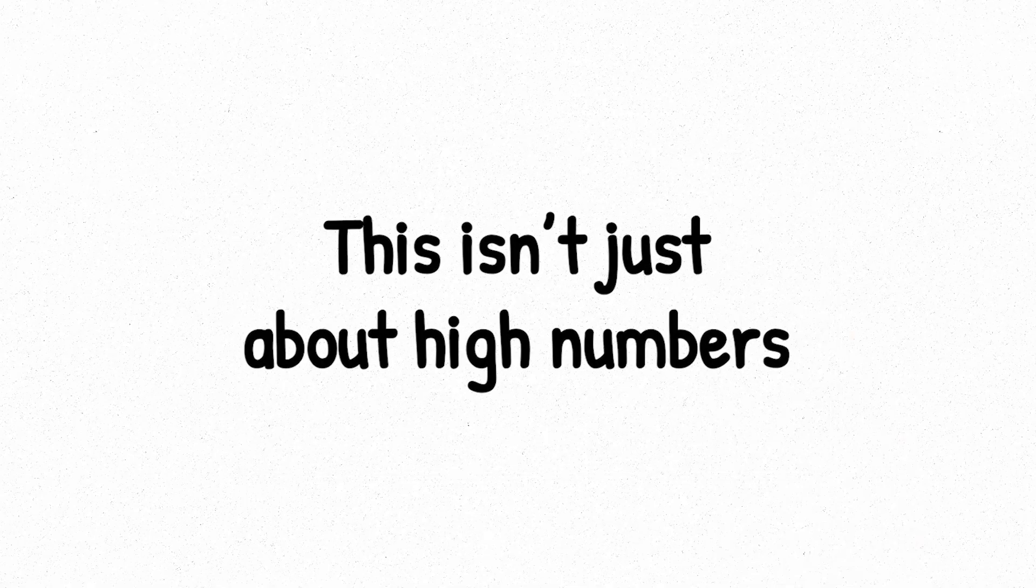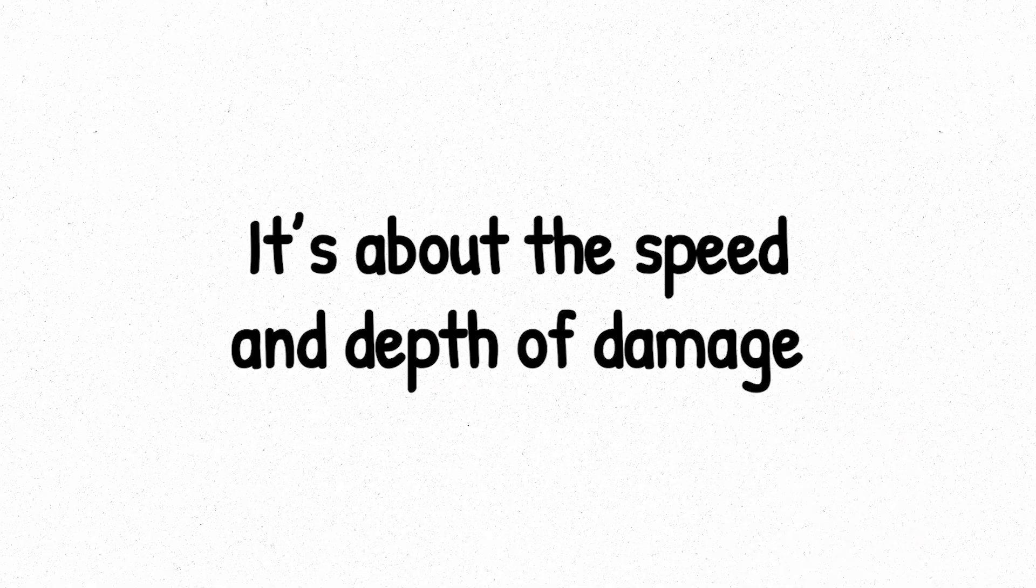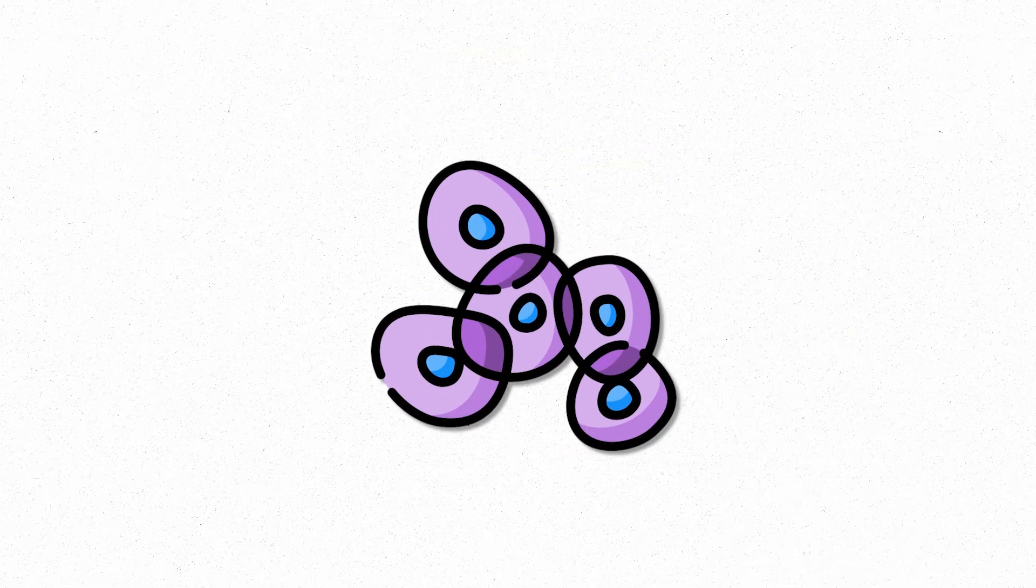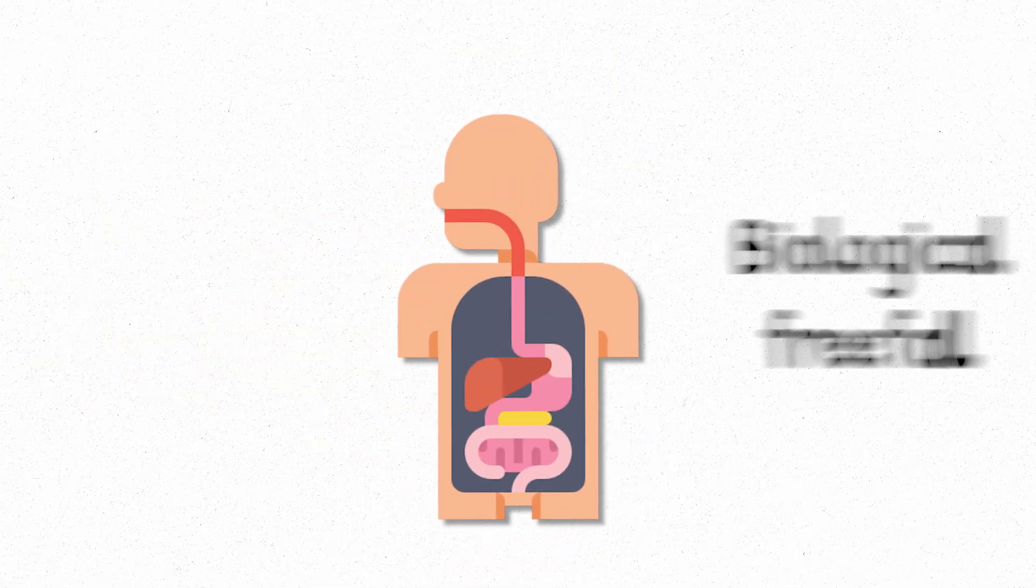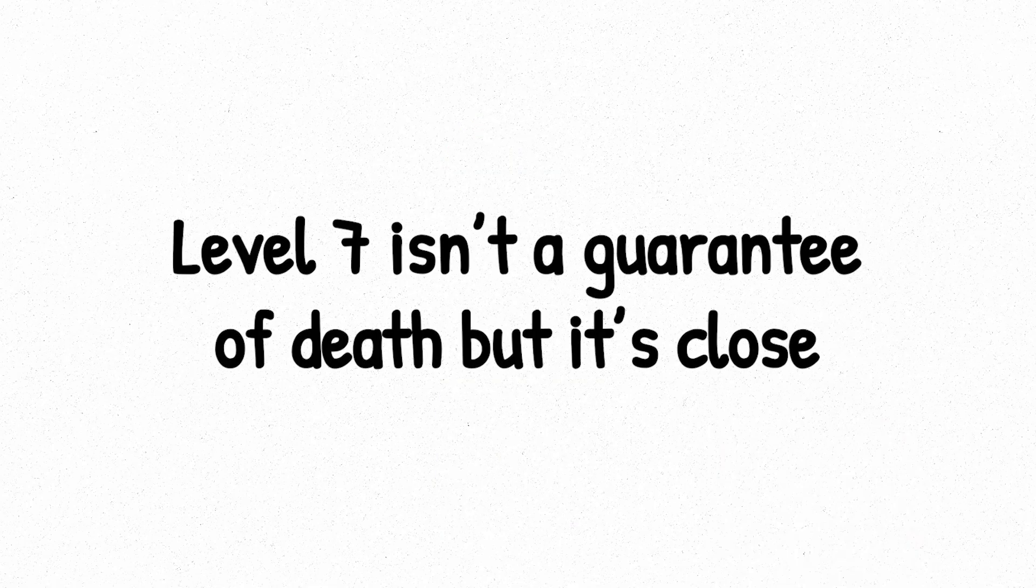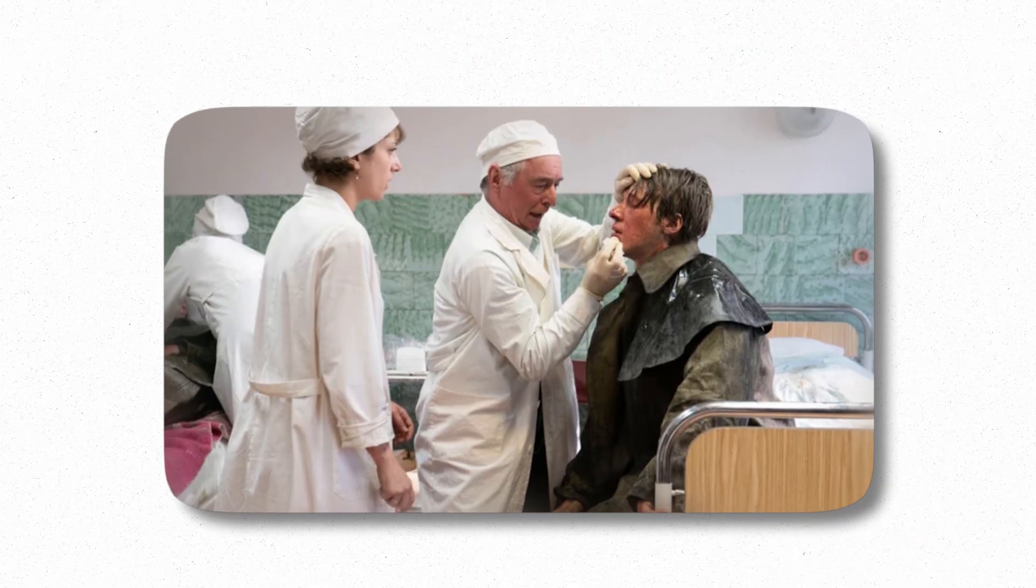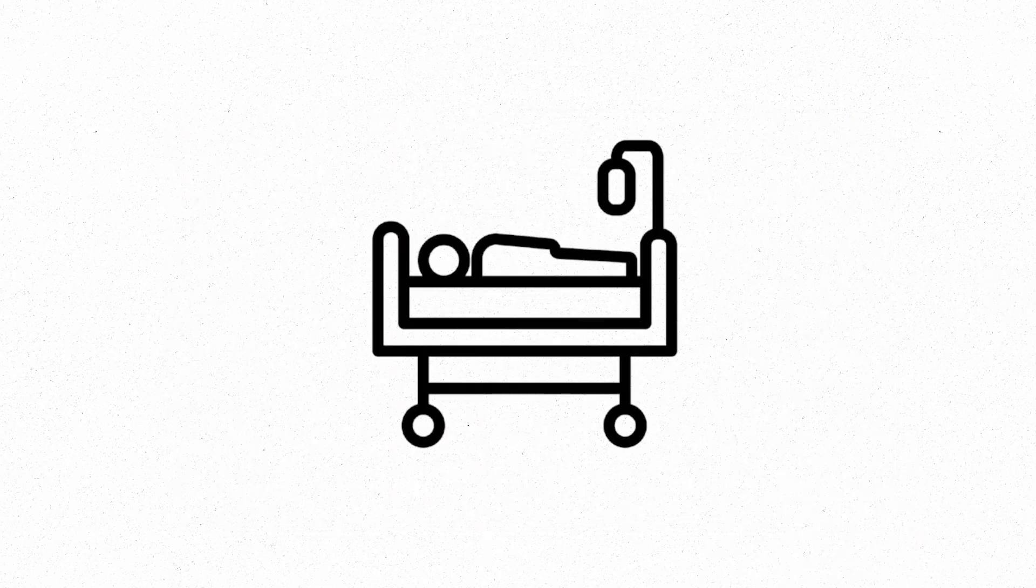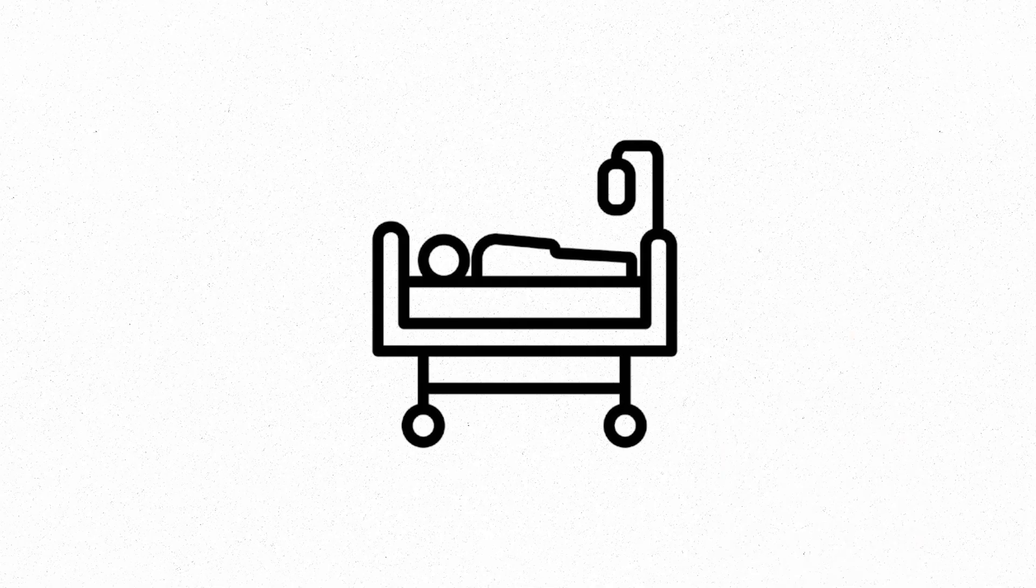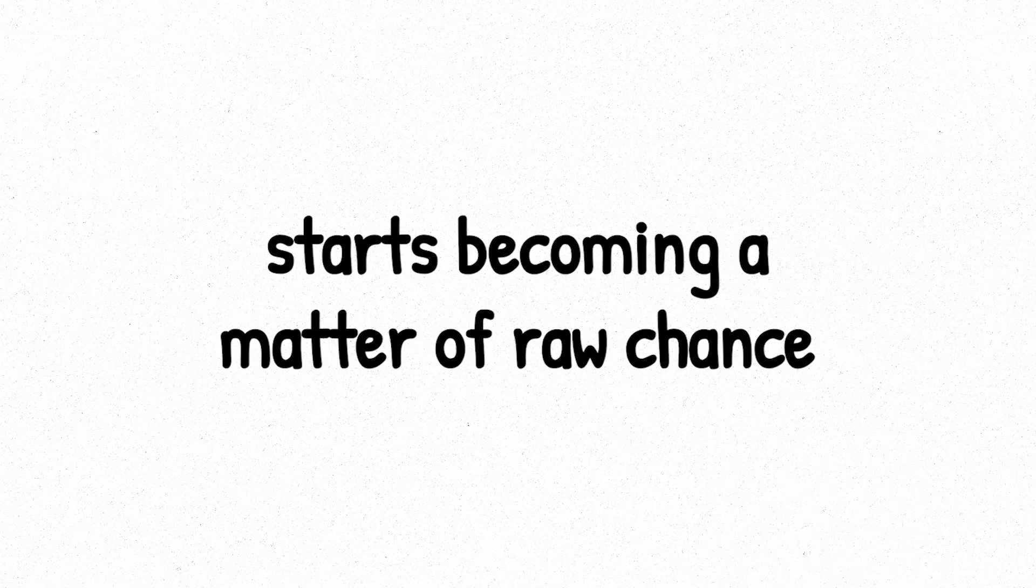This isn't just about high numbers, it's about the speed and depth of damage. Cells don't have time to repair. Systems don't have time to recover. The body enters a kind of biological freefall. Level seven isn't a guarantee of death, but it's close. With full hospital care, some people survive. Without it, odds drop fast. Every second counts. And beyond this level, survival stops being a question of treatment, and starts becoming a matter of raw chance.